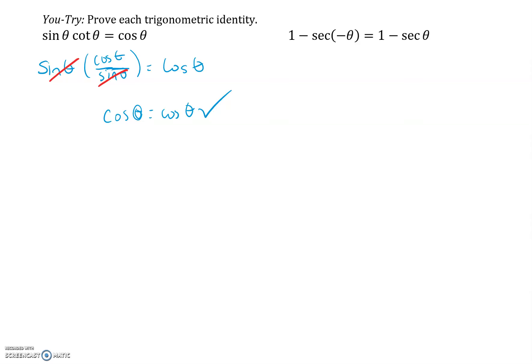The next one: one minus secant of negative theta equals one minus secant theta. Remember, you don't always have to keep the left side the same — you can manipulate whichever side you'd like. In the first you-try I manipulated sine theta times cotangent theta. When I see that negative theta, I immediately think about the negative angle identities. I don't have one directly for secant, but I do have one for cosine, and cosine and secant are related. The cosine of negative theta is just plain cosine theta.